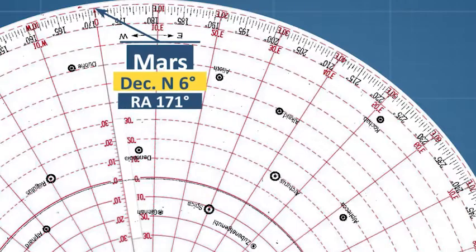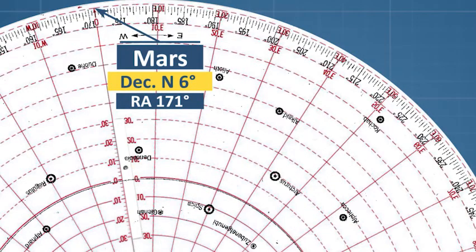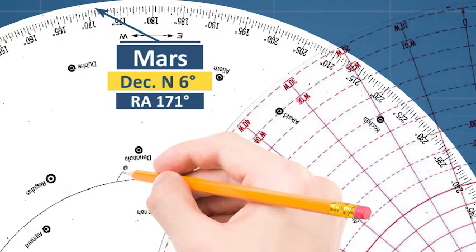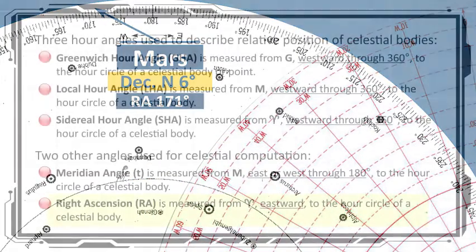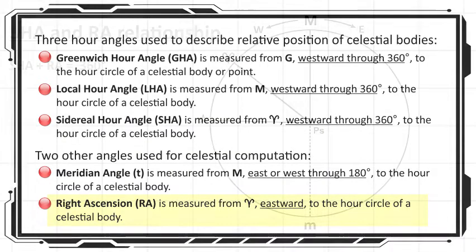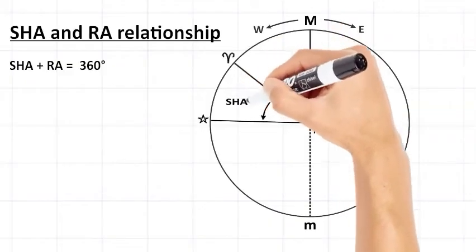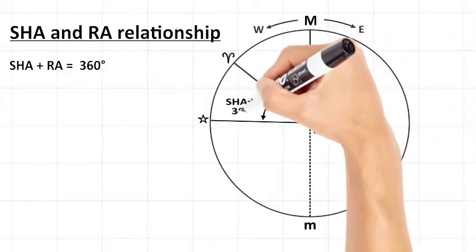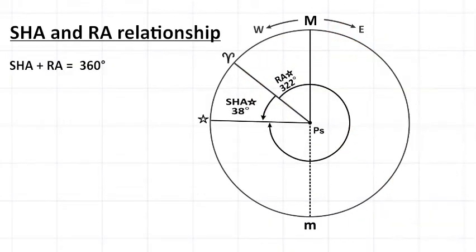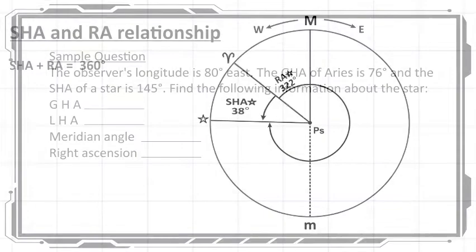Right ascension, abbreviated as uppercase RA, is often used to plot the sun, moon, planets, or minor stars on the rude star finder. Right ascension is measured from the first point of Aries eastward to the hour circle of a celestial body. Note that SHA plus RA add up to 360 degrees.